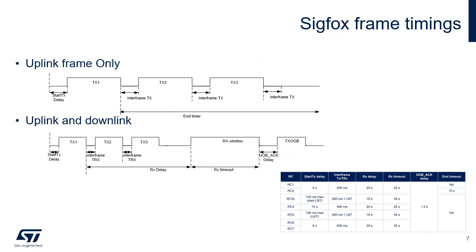The end device transmits data to the network in an asynchronous manner, as transmission data is only sent per device report event. The figures below depict the timing sequences with and without a downlink. The three transmissions, TX1, TX2, and TX3, contain the same payload information. These consecutive transmissions only maximize the probability of correct reception by the network. When the device observes a good link quality, it may decide to send only TX1 to save power consumption, only if a downlink frame is requested.